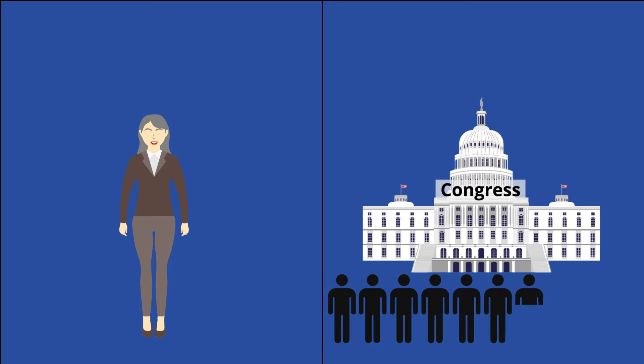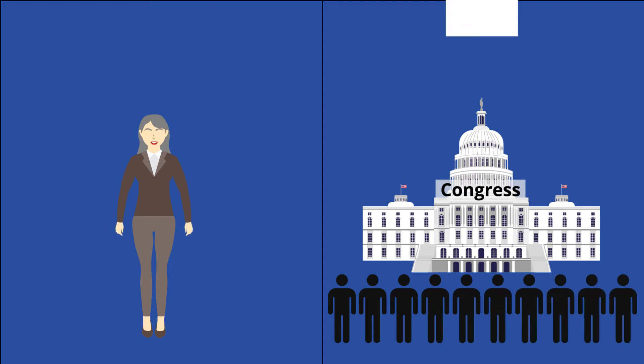An override veto is a two-thirds majority vote that Congress can pass to override a presidential veto. It is part of the system of checks and balances designed to keep any one branch of the government from becoming too powerful.